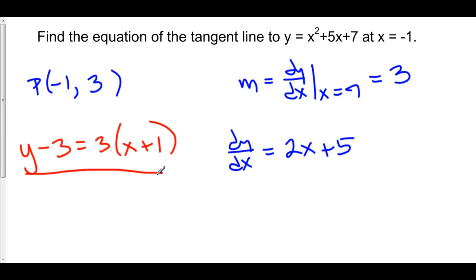This is the equation of the tangent line to our function y equals x squared plus 5x plus 7 at x equals negative 1. Thank you very much.